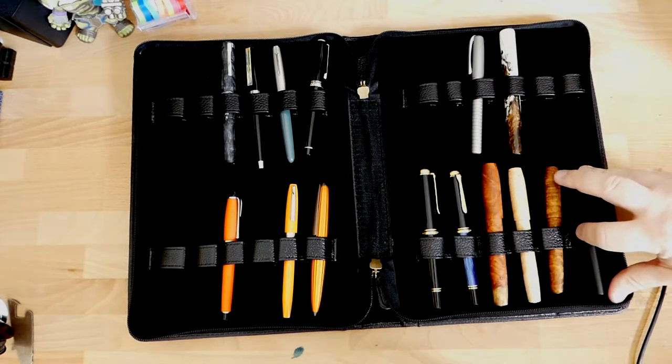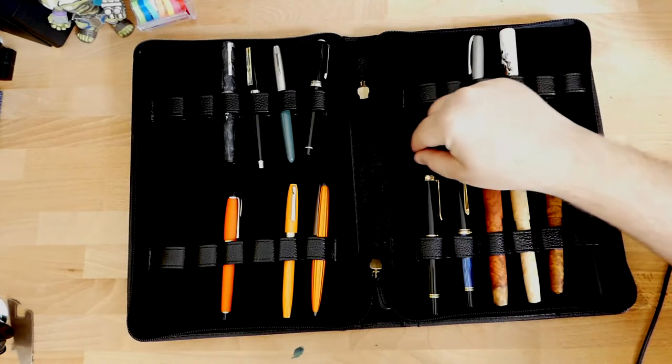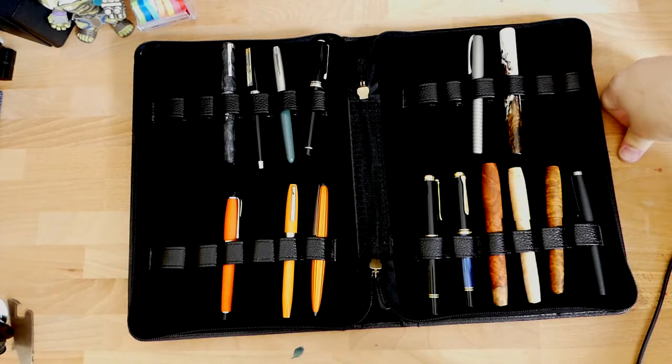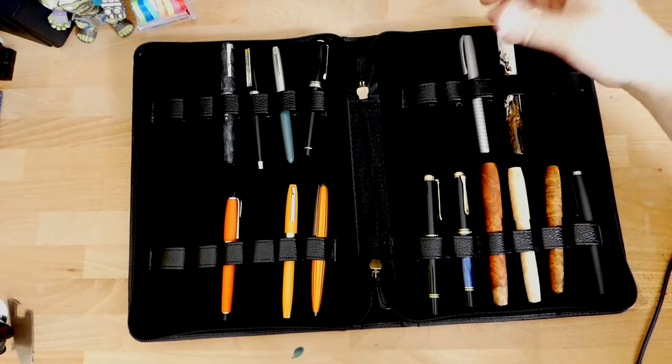That's the loop system in this case. You will also see, here's another picture, that there is a ridge that goes down the center of each one of these pages, and that will keep your pens from sliding up and down. It does seem to be very effective. I haven't had a pen slide out of its slot yet, so that's pretty cool.